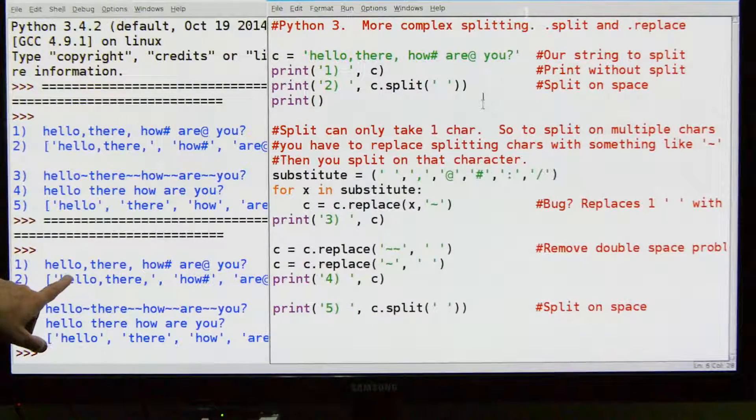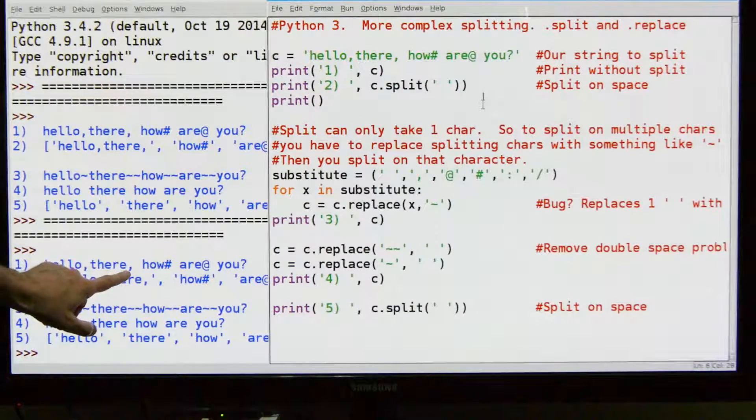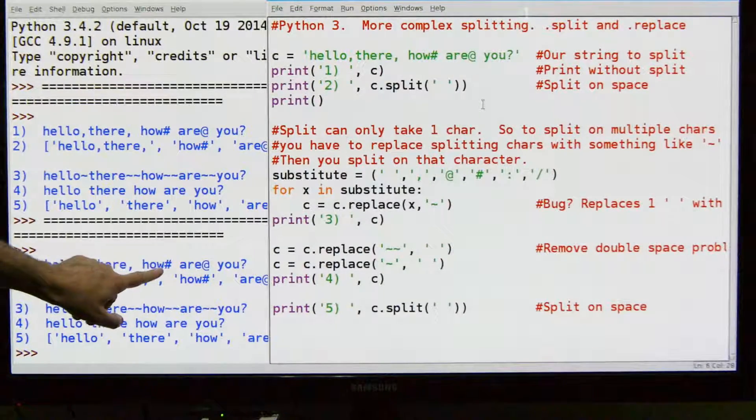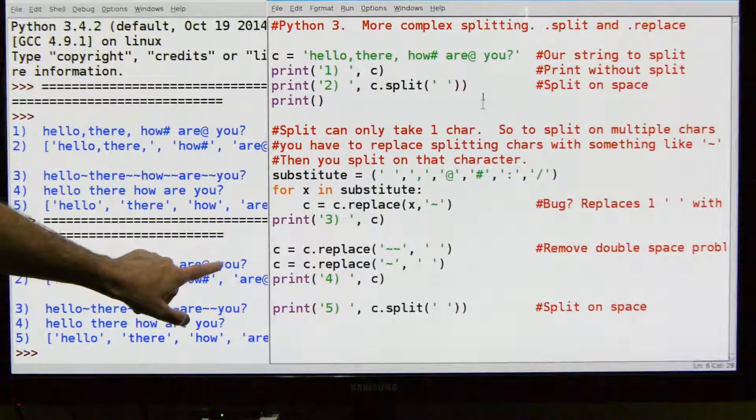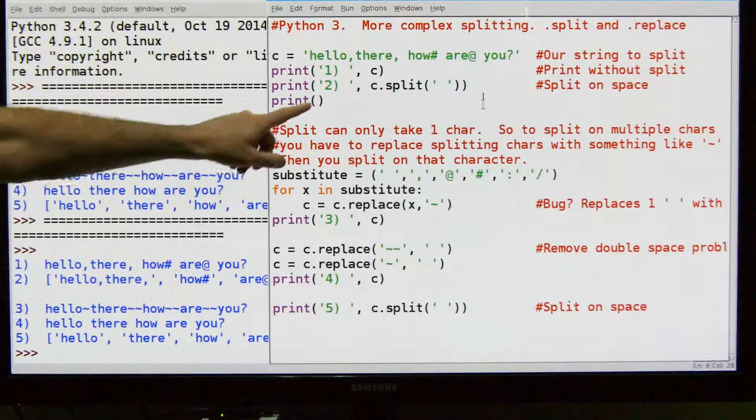So line one hello comma there comma space how pound space r at you question mark. Okay so that's line one.